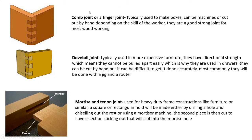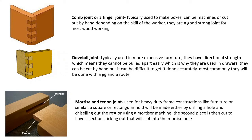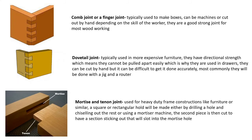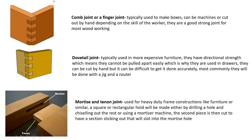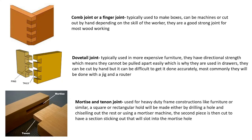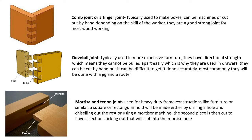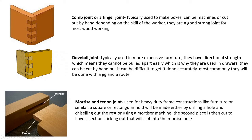A finger joint — also called a comb joint — is commonly used for boxes and can be machined on a CNC router or done by hand. It's very strong. The interlocking fingers — like interlocking your hands — give it its name. The main issue is that gaps between pieces reduce effectiveness, so it's typically reinforced with glue.